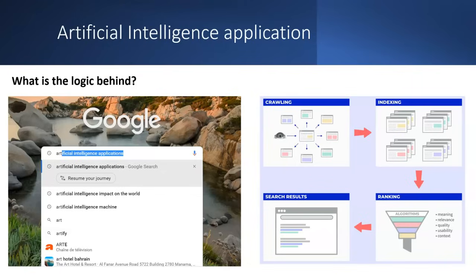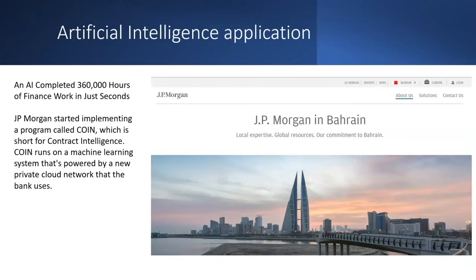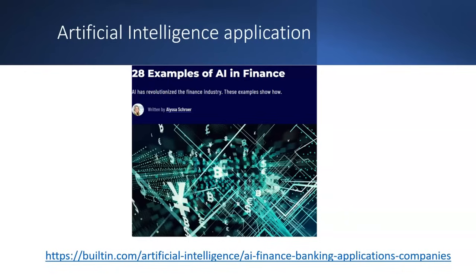When you write something, recommended words appear — this is based on association mining of words, large language models (LLMs), and recommendation systems. AI has also been used in finance — JP Morgan uses it. Finance is always looking for high revenue, and AI helps expedite work since time is money.